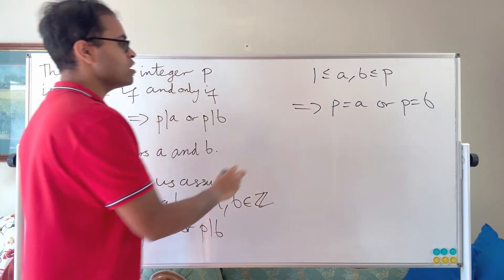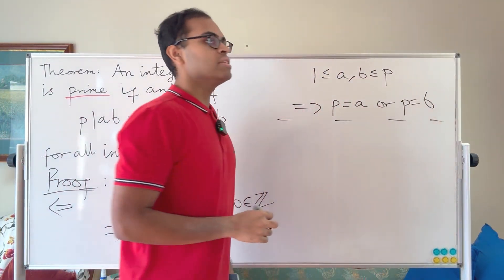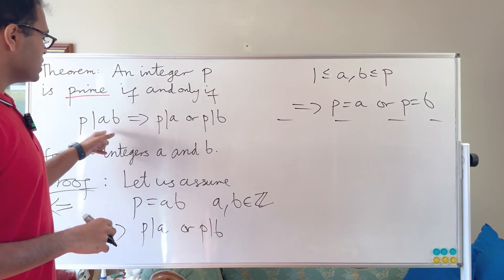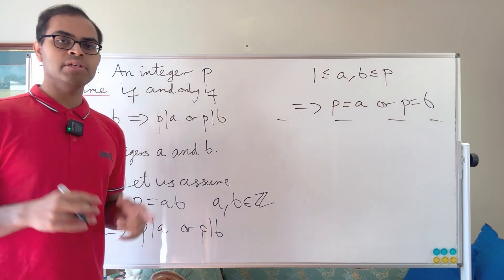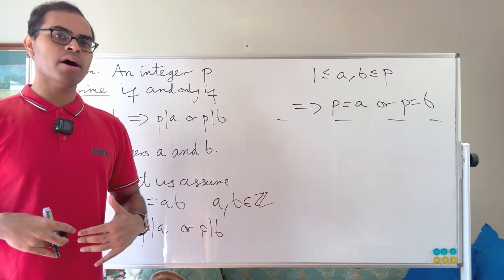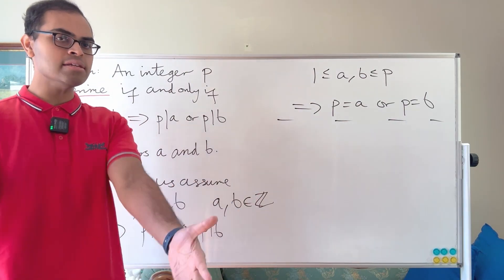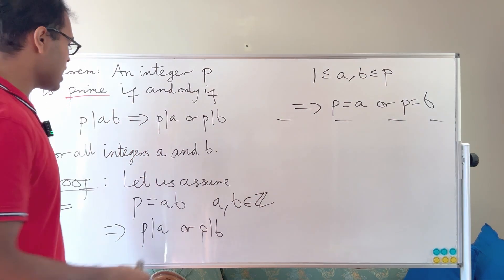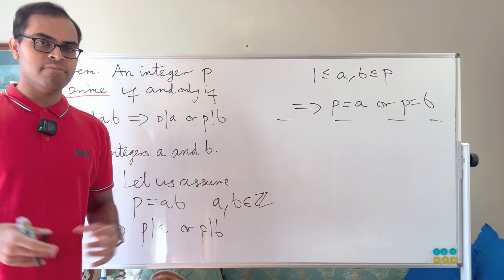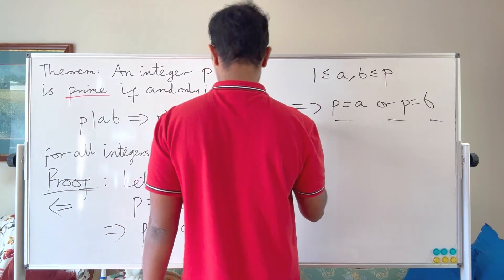That's one direction of our theorem proven. But the other direction is interesting: if we know that the only factors of p are 1 and itself, how do we say something about the multiples of p? We're going in the other direction — we're saying that p divides ab should imply p divides a or p divides b. Let's actually prove that direction.